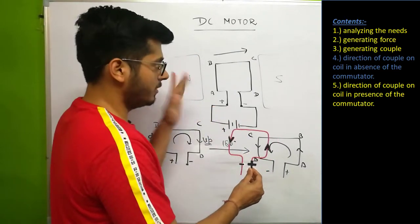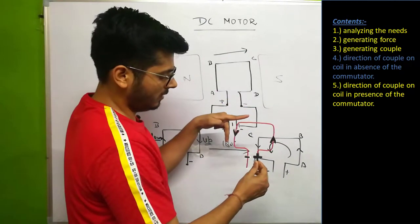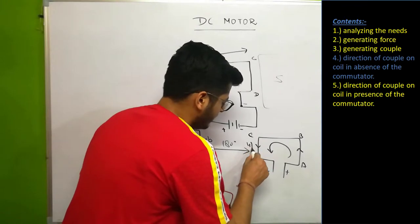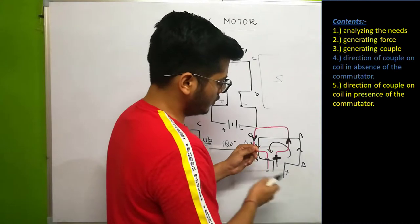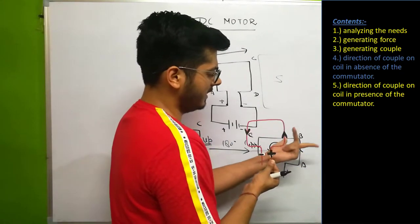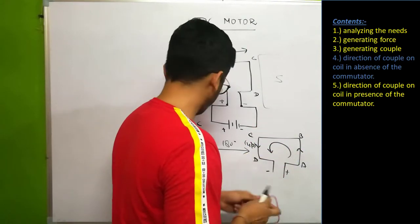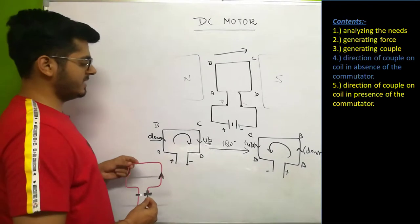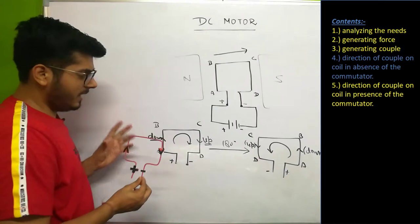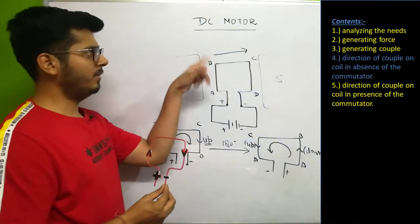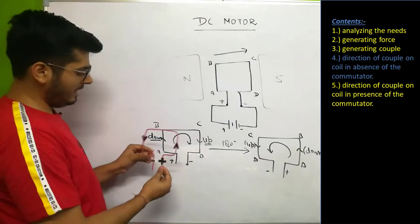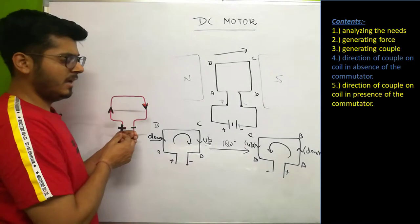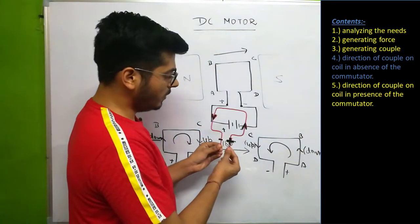In the second position, the magnetic field direction and current downward give a force pointing outside on the left side. On the right side, applying Fleming's left-hand rule, the force is inside. So comparing: in the first case, left side wants to move down and right side wants to move up. In the second case, left side wants to move up and right side wants to move down.